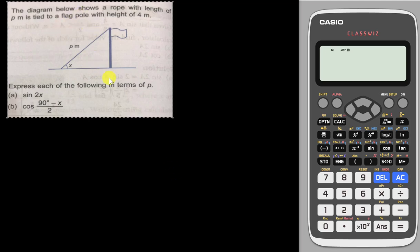All right, one of my students sent these questions to me and asked me to help. The question says the diagram below shows a rope with length p meters tied to a flag pole with a height of four meters. So at first we need to know the length of the flag pole here should be four.